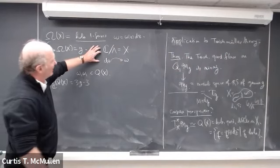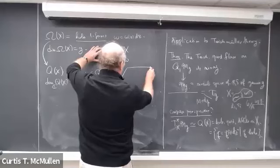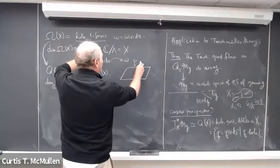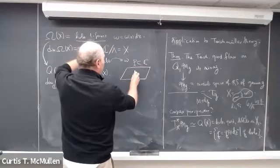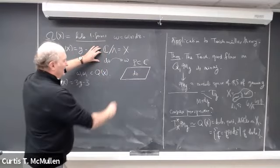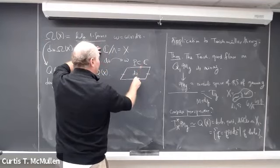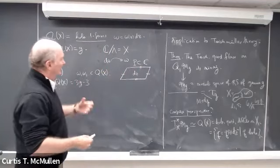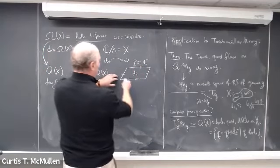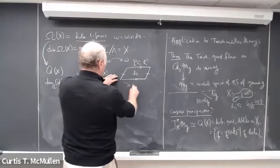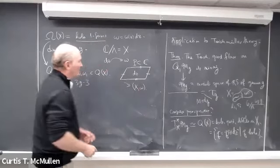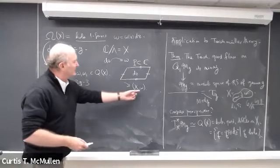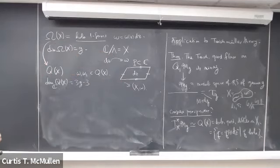Going back to the case of an elliptic curve: one way to picture an elliptic curve with a holomorphic one-form is to take a parallelogram in the complex plane with the one-form dz, then glue opposite edges by translation. Since dz is translation-invariant, it descends to give a holomorphic one-form on the quotient. So the choice of a lattice uniformizing x — or a fundamental domain — is the same as the choice of a holomorphic one-form on the quotient elliptic curve.